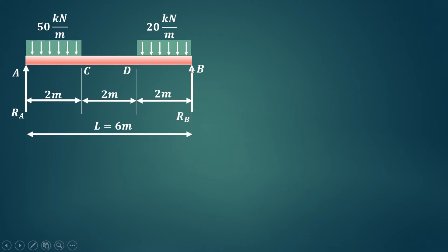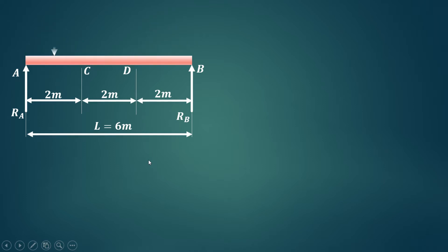First we have to find the reactions RA and RB, so we'll convert the uniformly distributed loads into point loads. For the UDL of 50 kilonewton per meter acting over 2 meters, the equivalent point load is 100 kilonewton acting at the center of that distribution. Similarly, the UDL of 20 kilonewton per meter over 2 meters gives a point load of 40 kilonewton acting at the center of that distribution.